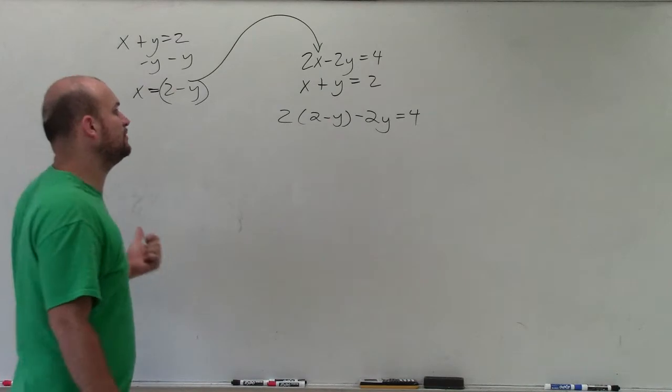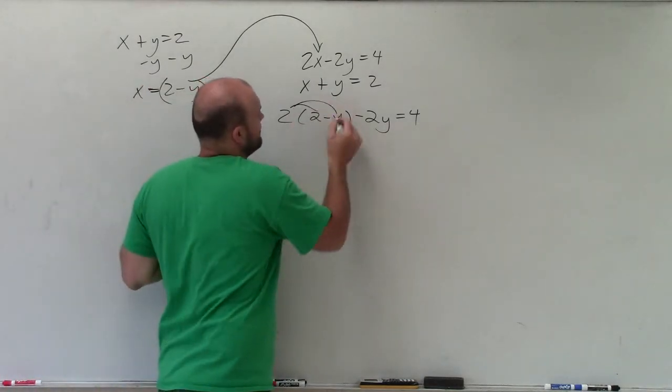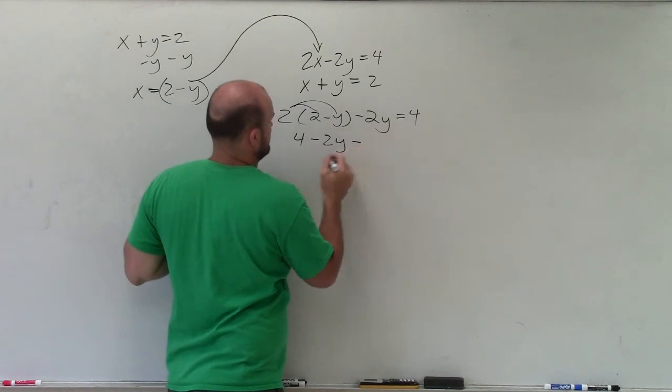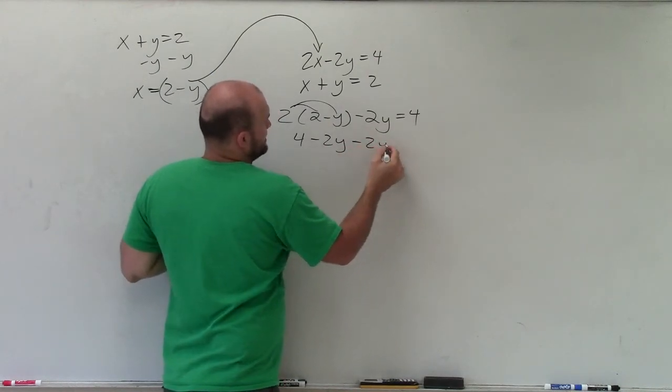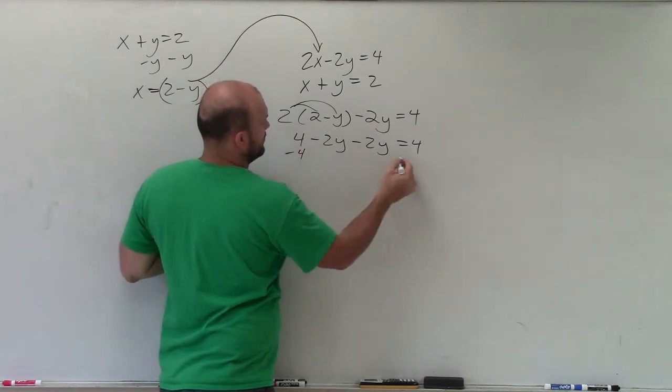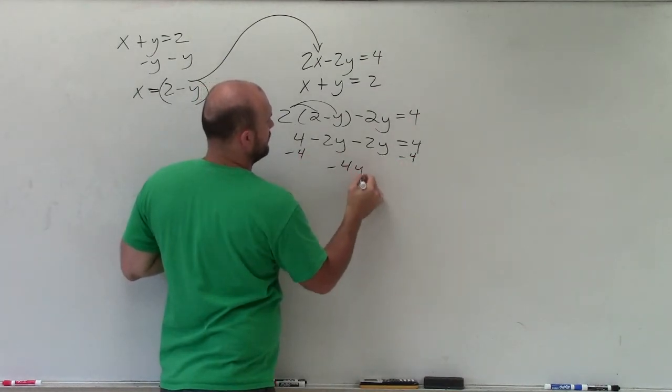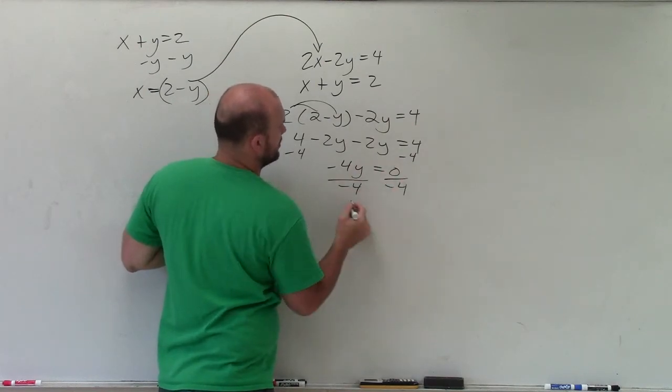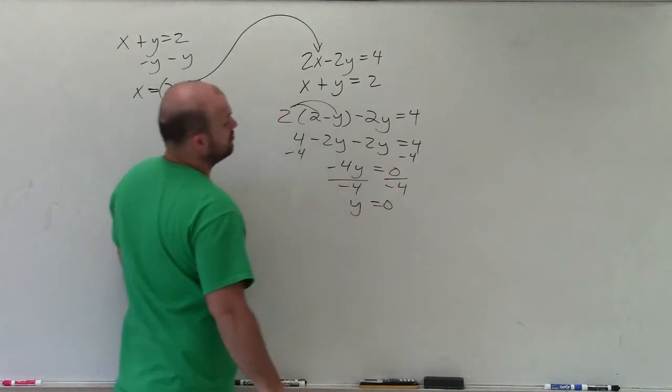Now I have an equation with only y's. I apply the distributive property. I get 4 minus 2y, minus 2y equals 4. Subtract 4, subtract 4. Negative 4y equals 0. Divide by negative 4. y equals 0. Fair enough.